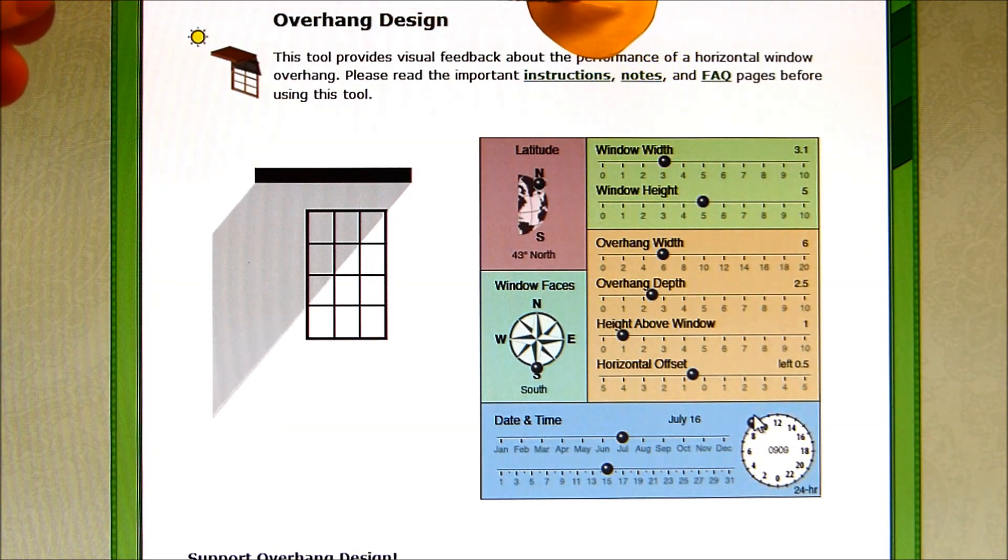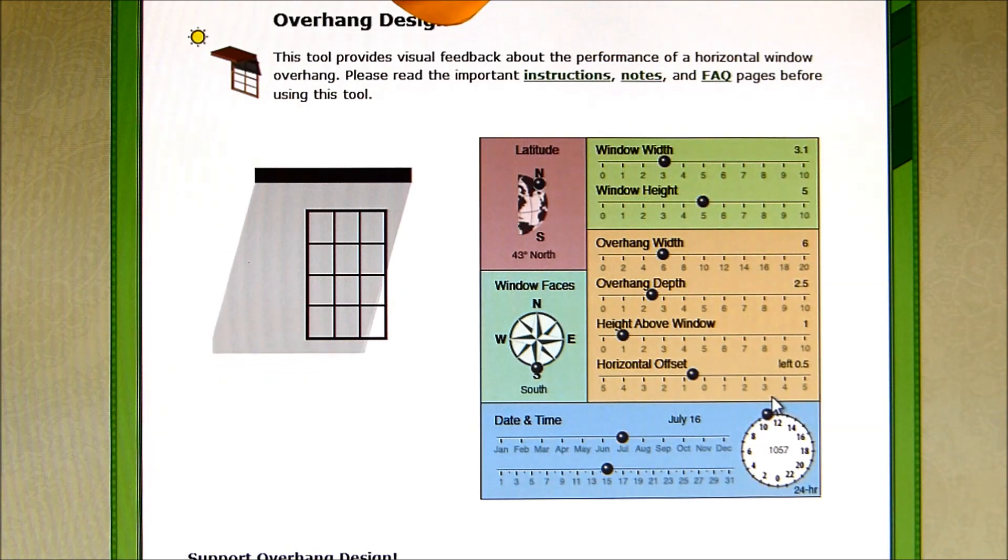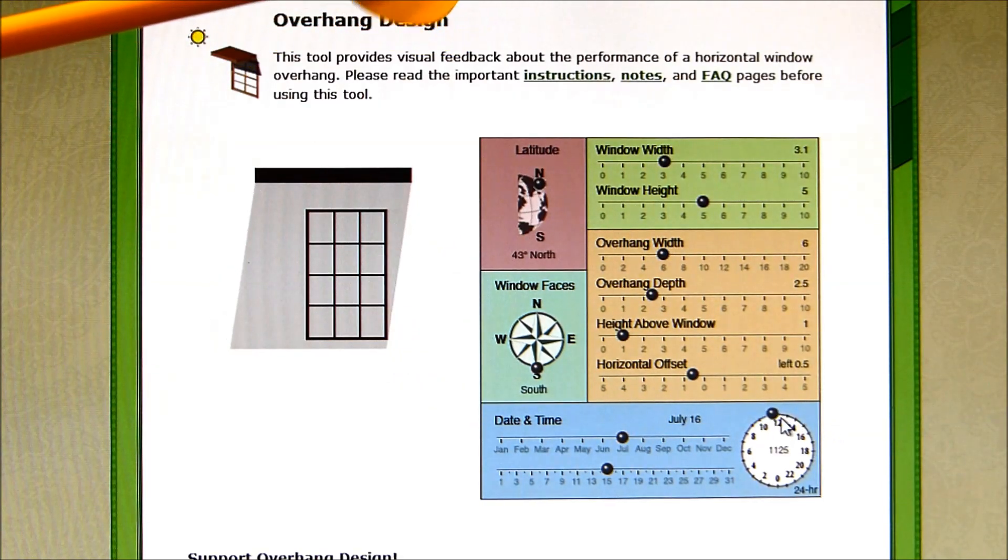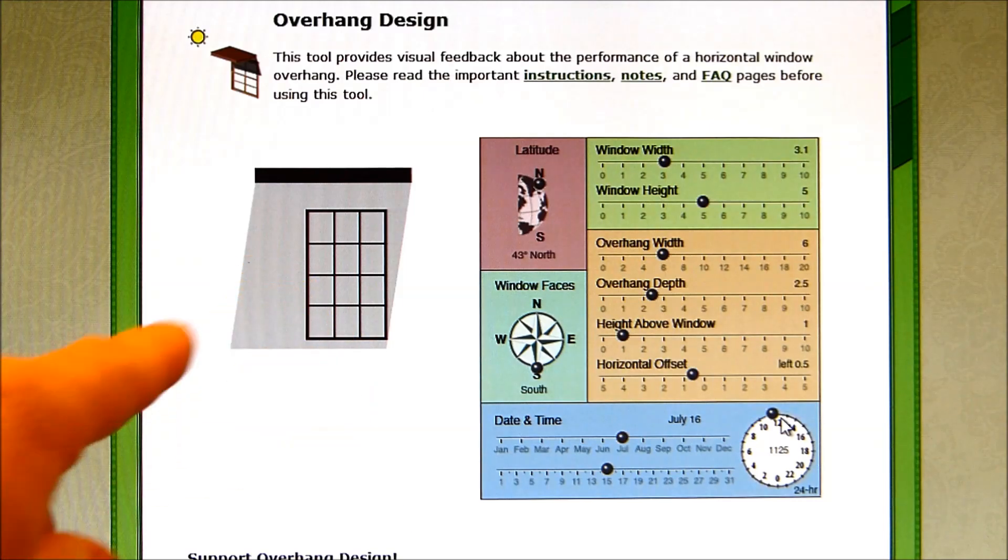So as the sun rises and goes over the top of the window and to the other side, we get this shading.